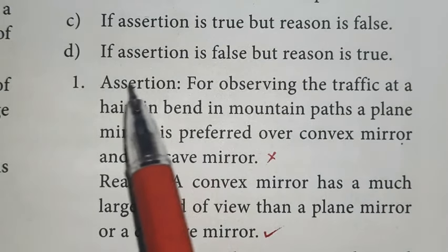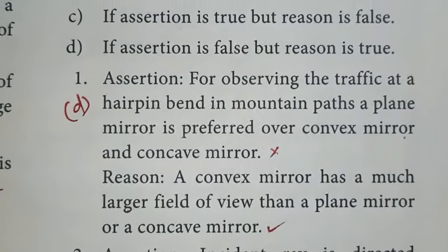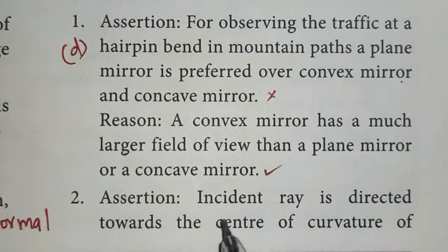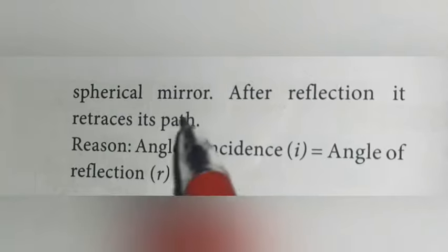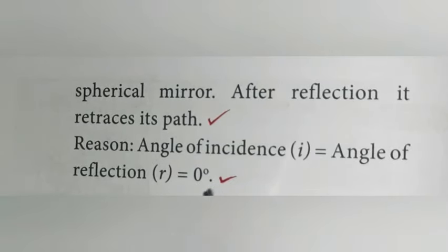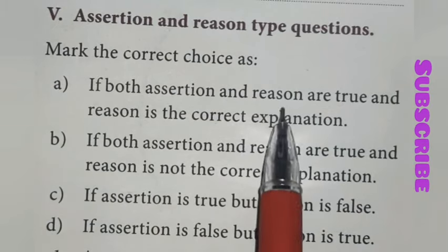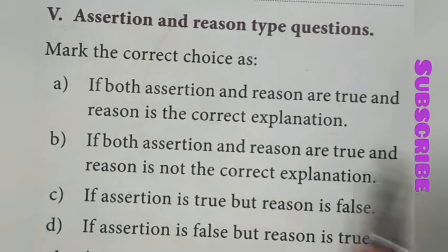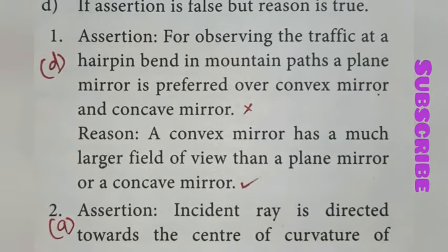Reason is true. So option D, if assertion is false but reason is true, for first one option D is the right answer. Next, for second one, assertion: incident ray is directed towards the center of curvature of spherical mirror, after reflection it retraces its path. Yes, this is true. Reason: angle of incidence equals angle of reflection zero degrees. Yes, this one is also true. So assertion and reason both are true, and reason explains assertion. So for this, correct choice is A. If both assertion and reason are true and reason is a correct explanation, for second one option A is the right answer.